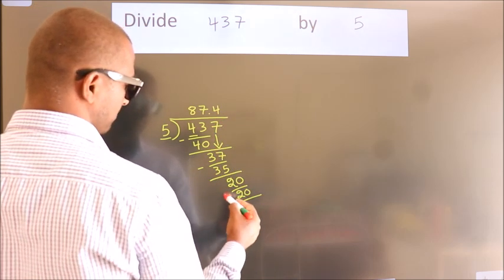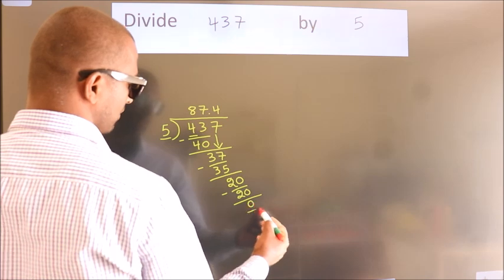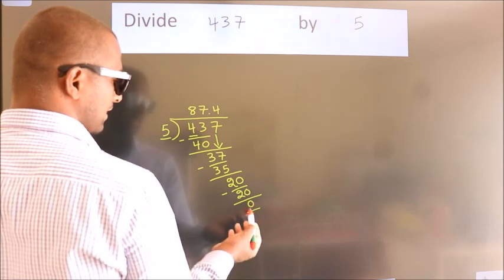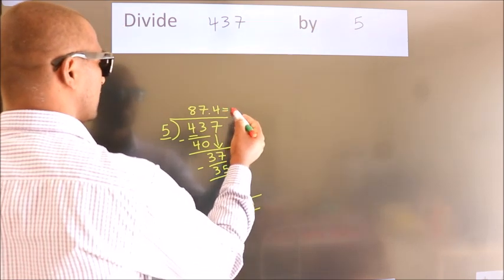Now we subtract. We get 0. We got remainder 0. So this is our quotient.